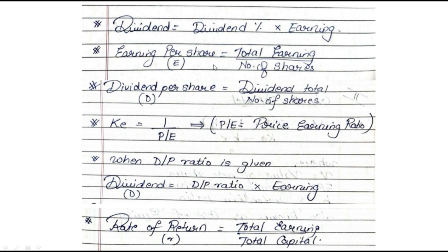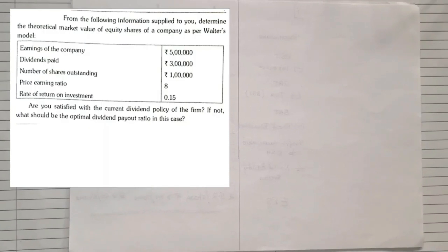There are also supporting formulas: dividend = dividend percent × earning per share (if dividend is given in percentage form); earning per share = total earnings / number of shares; dividend per share = total dividend / number of shares; cost of equity = 1 / PE ratio; dividend = dividend payout ratio × earnings; and rate of return = total earnings / total capital.